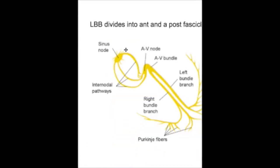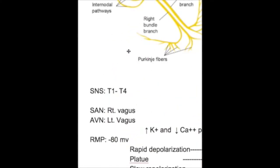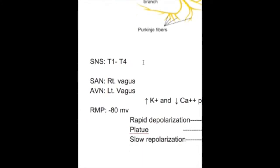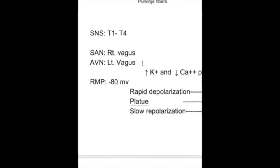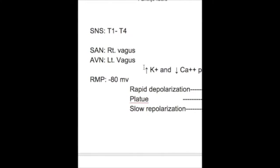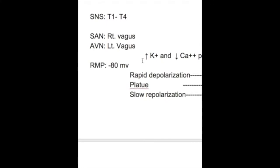The nerve supply to the SA node: sympathetic nerves are from T1 to T4, and the parasympathetic supply to the SA node is from the right vagus, while for the AV node it is from the left vagus. This is because the SA node develops from the right side of the body and the AV node develops from the left side.